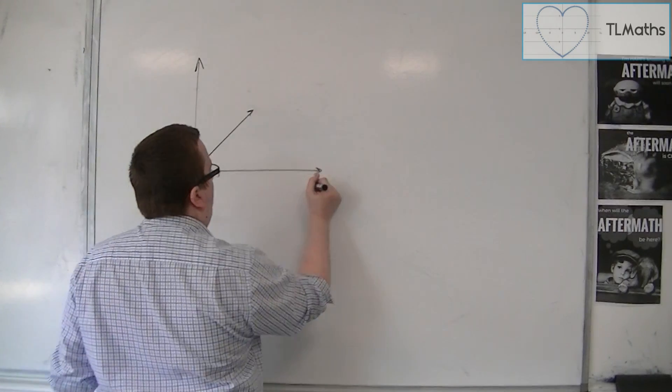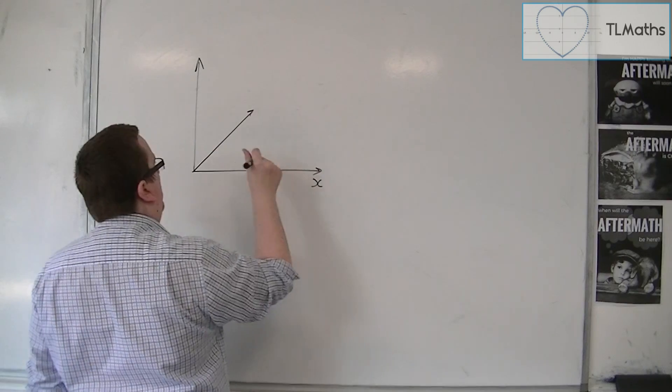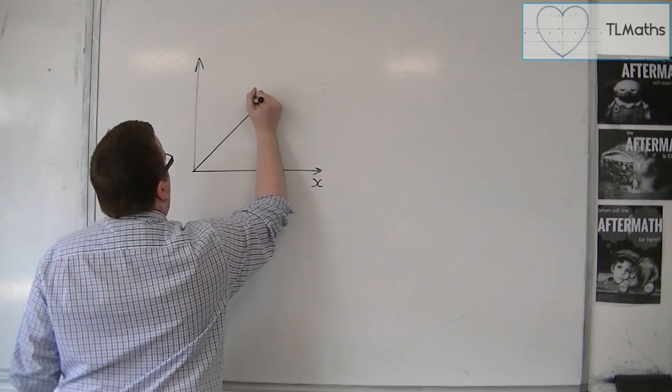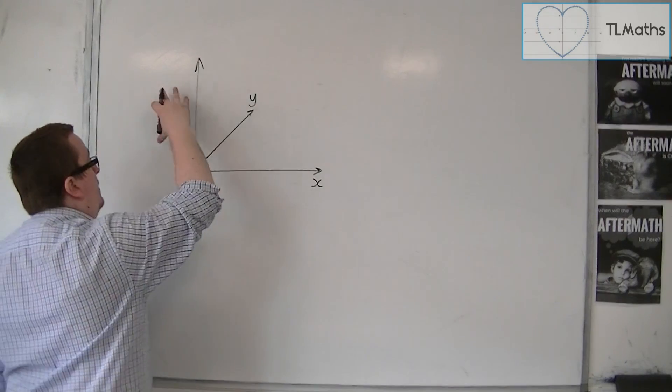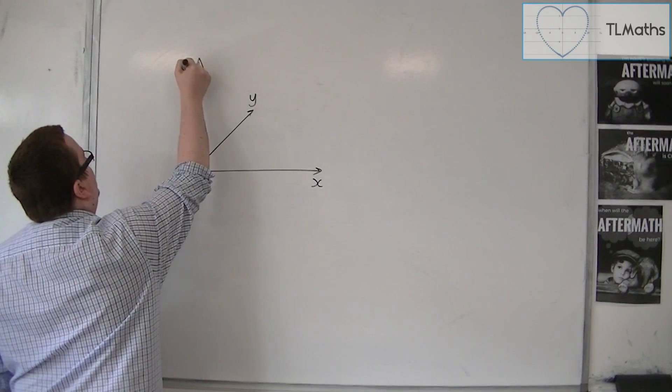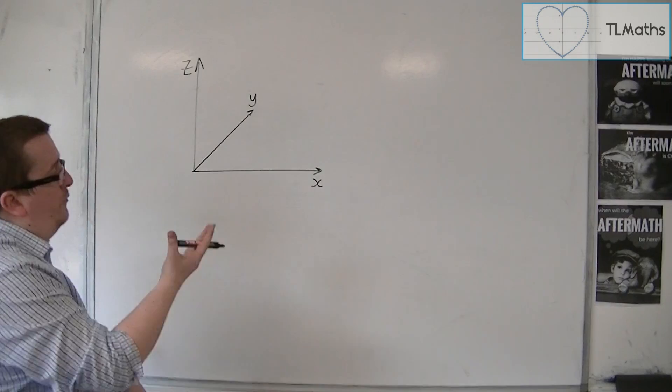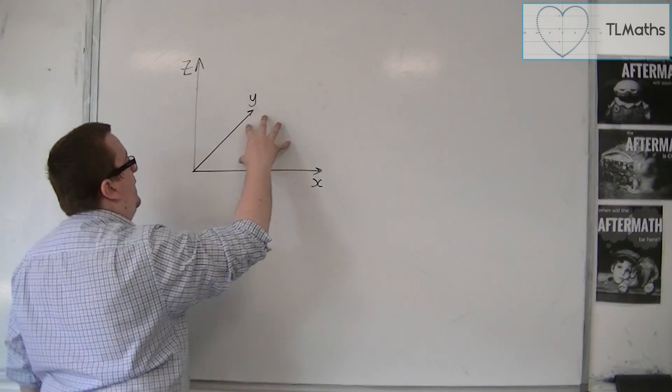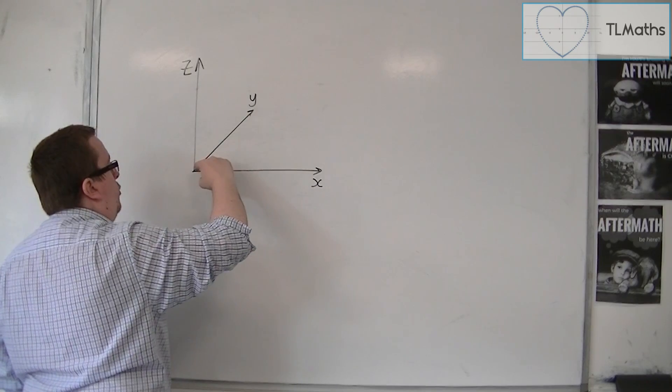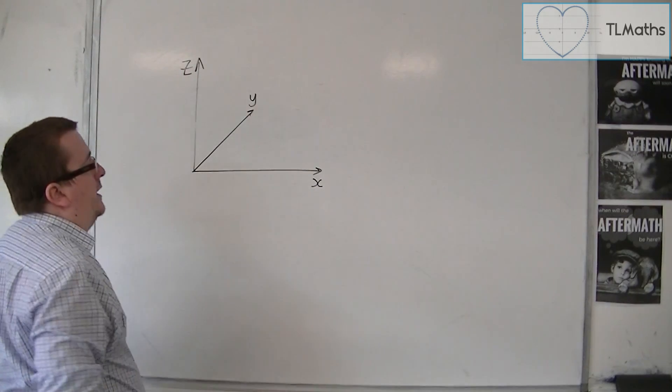And now I might say that actually this bottom face is like the floor, and this is a z-axis that rises up from the floor. So it would be kind of like the corner of the room. This is the floor, and that's the corner of the room, and that's the corner wall. Corner of two walls.